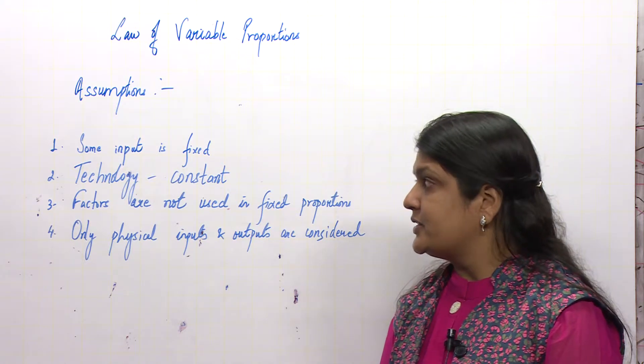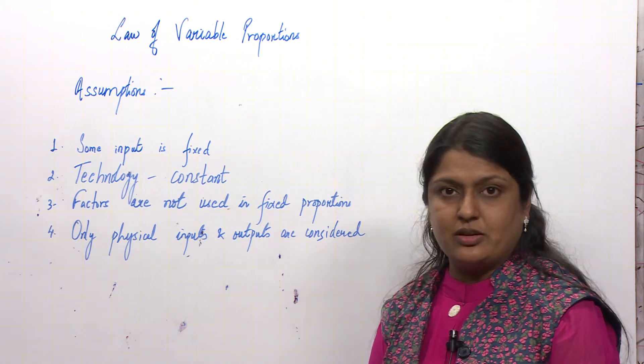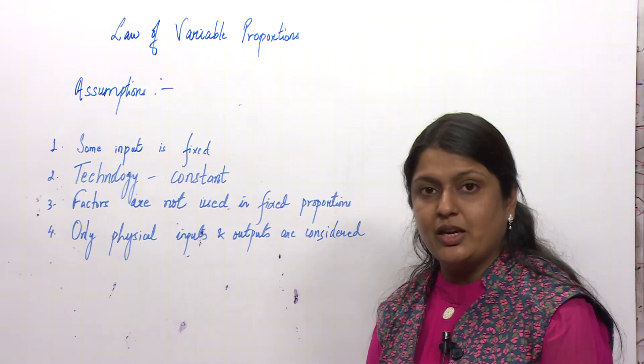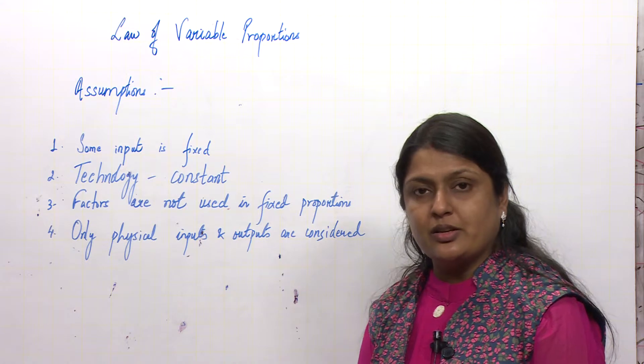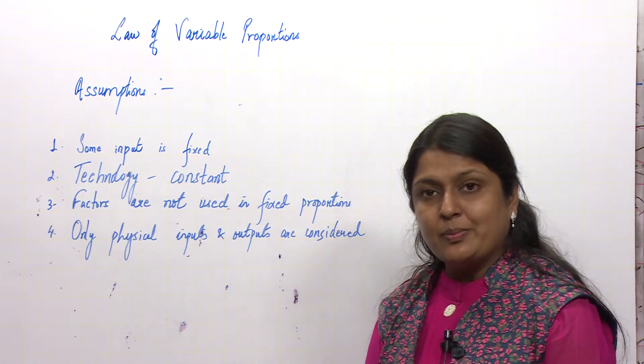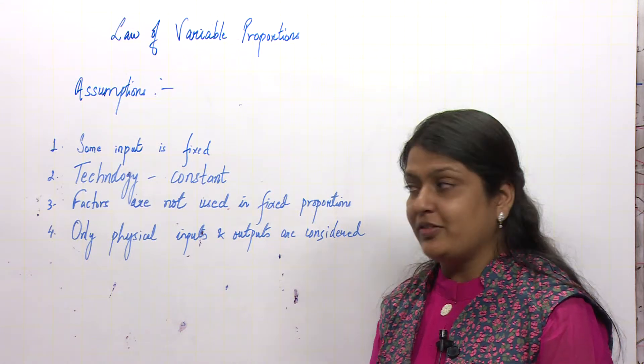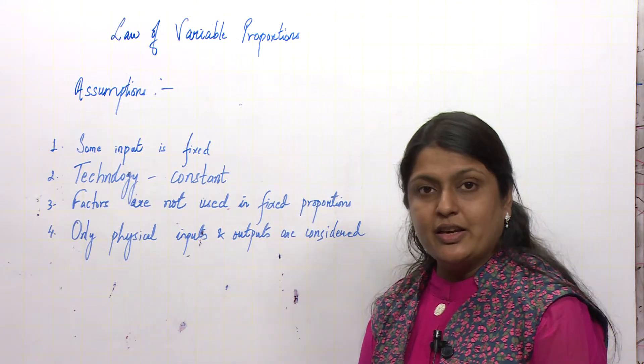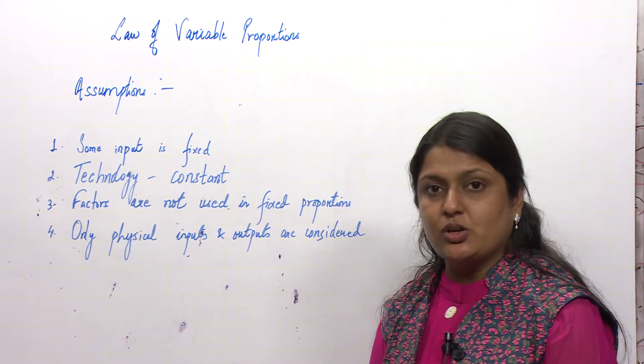The other one says technology remains constant, because if technology changes, then production can change. Therefore, for production patterns to show a consistent behavior as per the law, it is assumed that technology is constant.